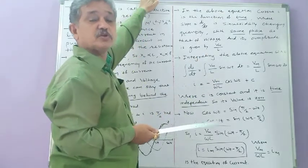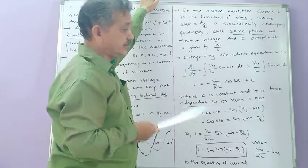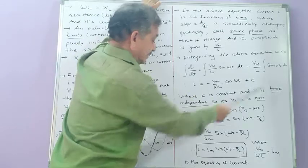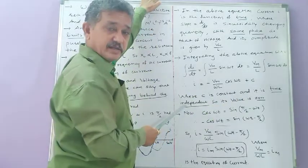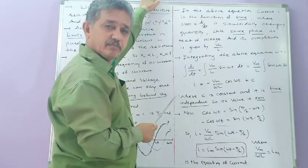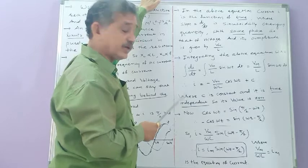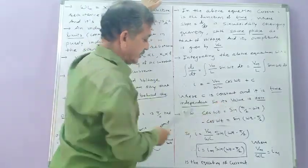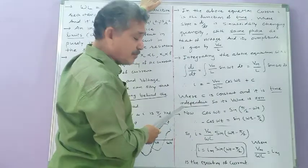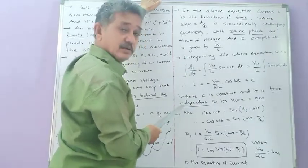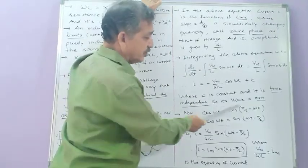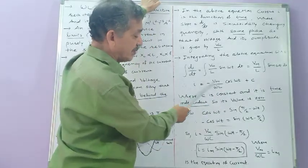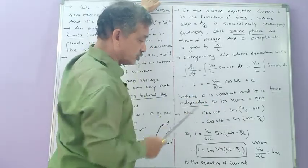C is the constant of integration and it is time-independent — it does not depend on time, so its value is 0. Substituting C = 0, we have I = −Vm/(ωL) cos(ωt).